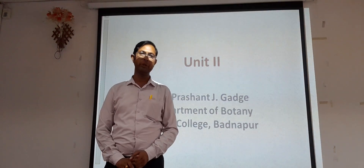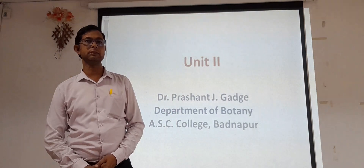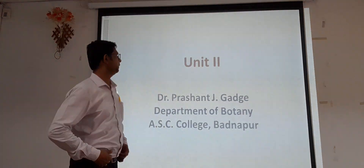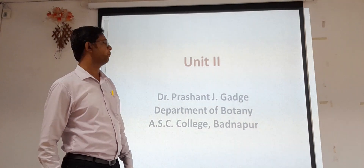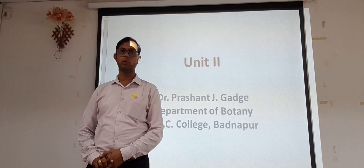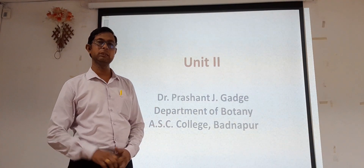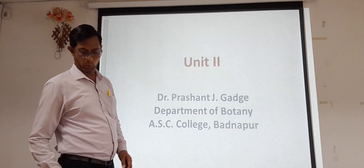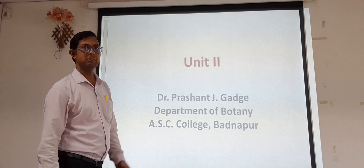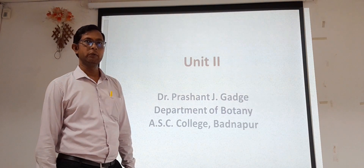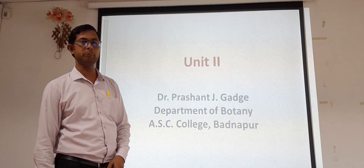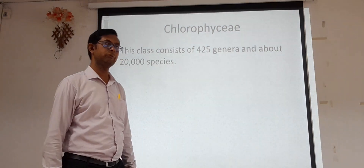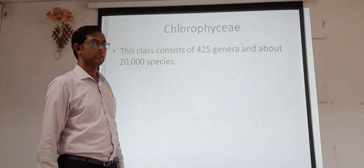Hello students. We have started unit number 2 and in the last lecture we discussed the members of Chlorophyceae. Today we are going to continue the topic remaining in the Chlorophyceae. Chlorophyceae are organisms having green color, meaning they have green pigmentation prominently present in their cells or body. The best example is Chara. Chlorophyceae has 425 genera with more than 20,000 species discovered to date.